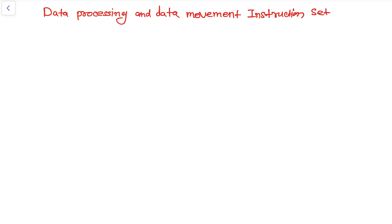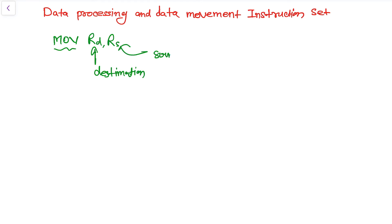In this lesson we are going to cover a few more instruction sets: data processing and data movement. The first instruction we are going to discuss is the MOV instruction. Its syntax is MOV Rd, Rs — where Rd is the destination register and Rs is the source register. For example, MOV R4, R3 will load R4 with the content of R3.